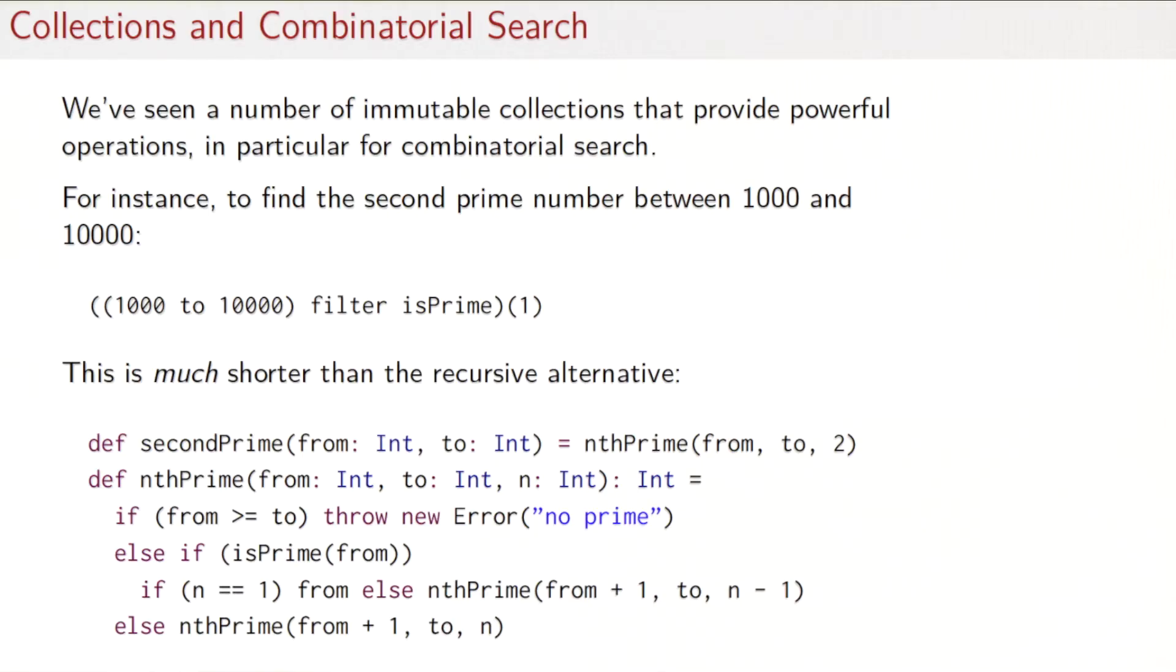We will see how this lets you write very elegant solutions to search problems. In the previous sessions you've seen a number of operations on immutable collections that provide powerful tools for combinatorial search. For instance, if you wanted to find the second prime number between 1000 and 10,000, you could write an expression strictly according to the specification.